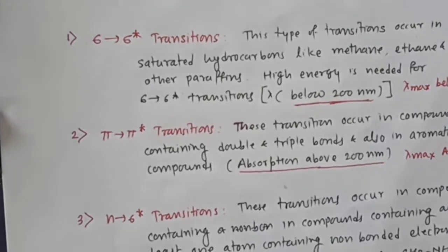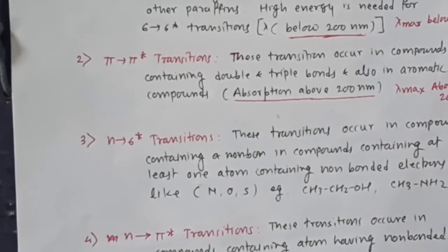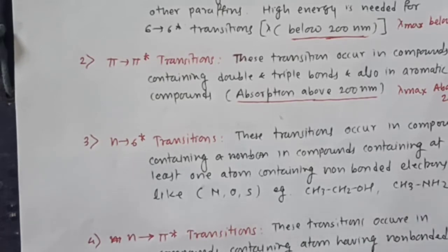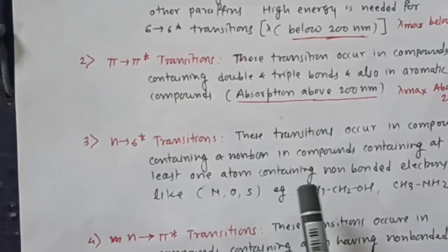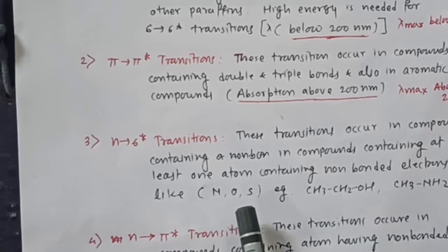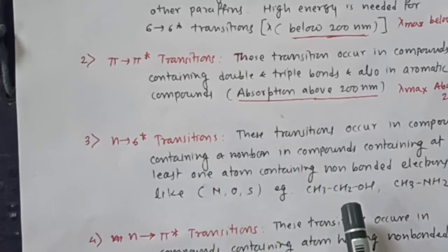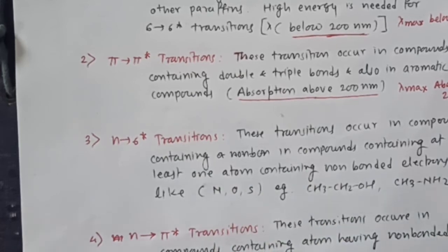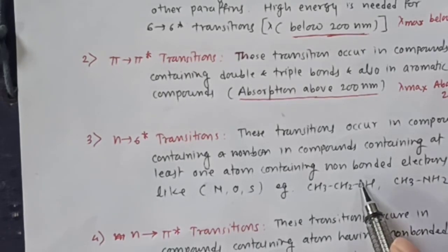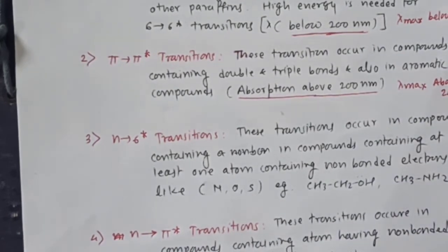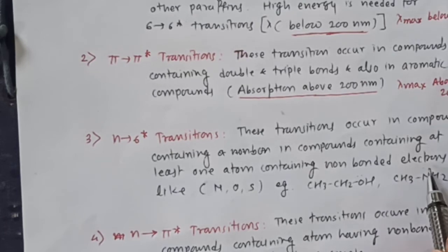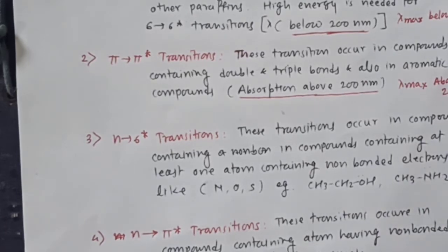The third type of transition is n to sigma star. This transition occurs in compounds containing at least one atom with non-bonded electrons, like nitrogen, oxygen, or sulfur. In compounds like ethyl alcohol or methyl amine, a non-bonded electron pair is present, and therefore n to sigma star transition will occur in these types of molecules.